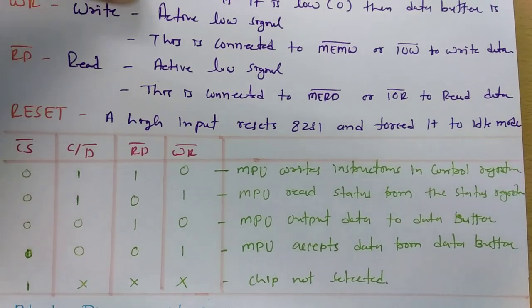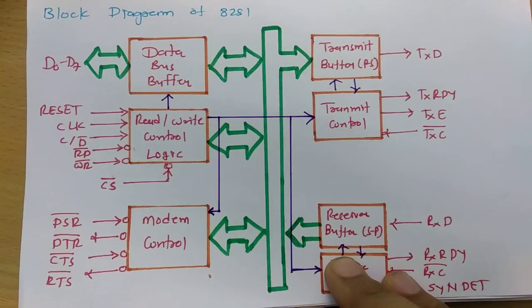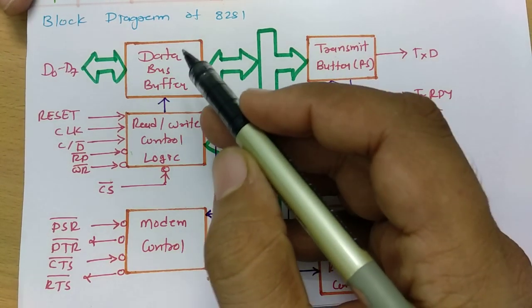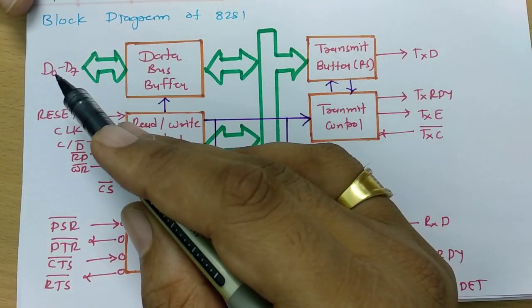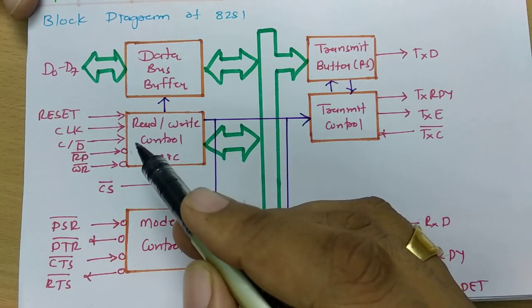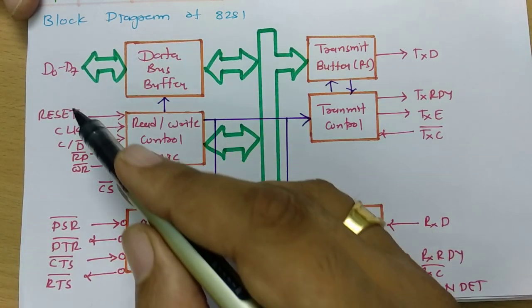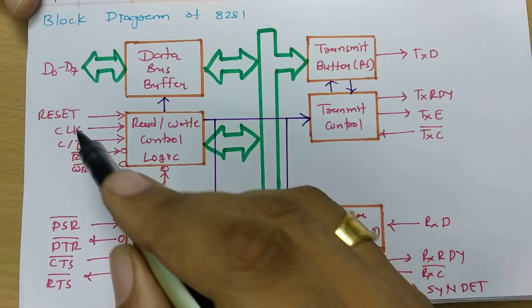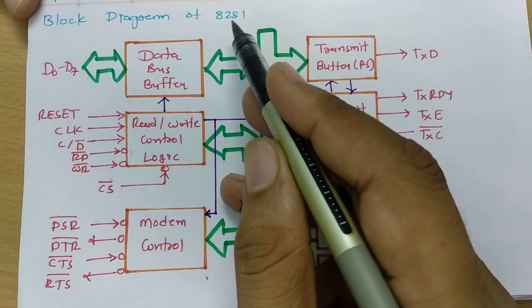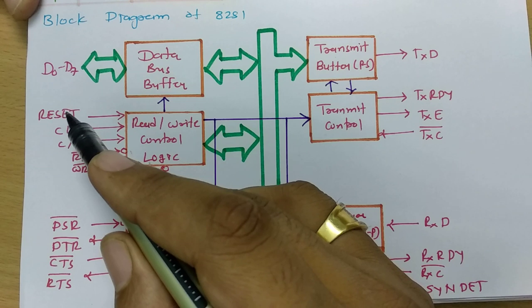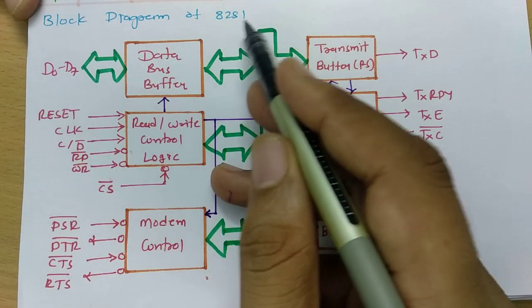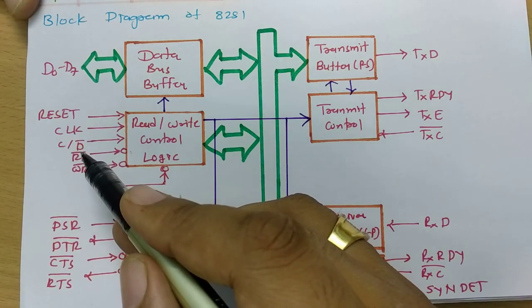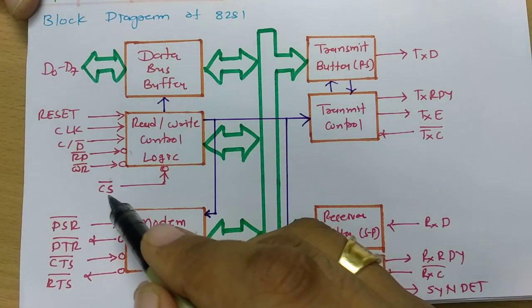Now let us see the block diagram of 8251 to understand how the IC functions. In the data bus buffer, there is data D0 to D7. These are the control signals in the read/write control logic. Reset forces 8251 into idle mode. There is a clock signal, C/D bar, Read bar, Write bar, and Chip Select.